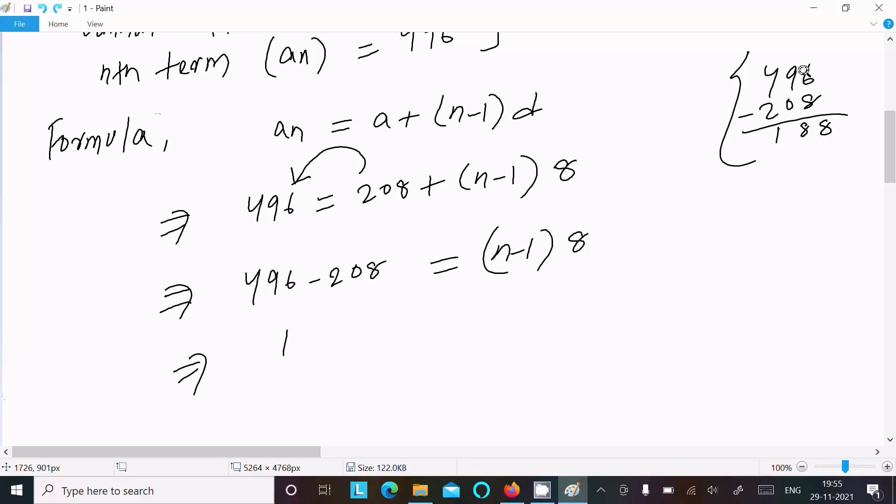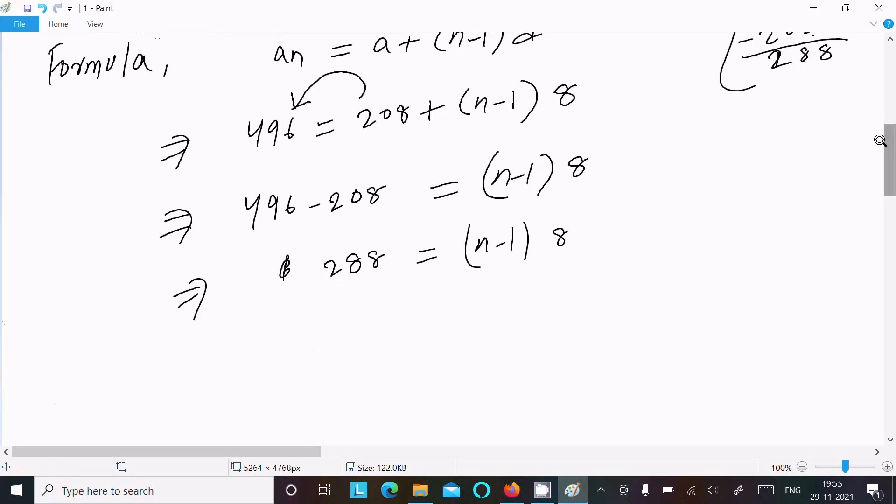So one time, this is here 16, 16 minus 8 is 8, here 8, and 4 minus 2 is equal to 2. Okay, so here this is 288.